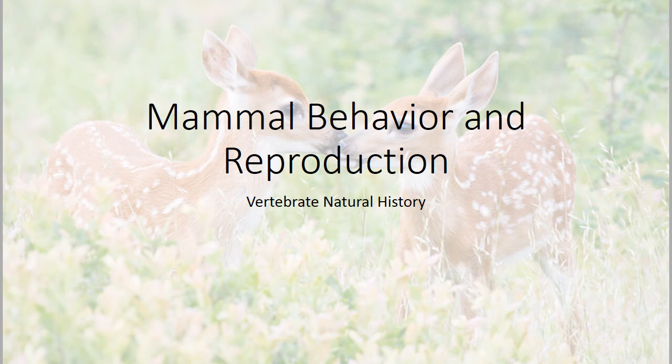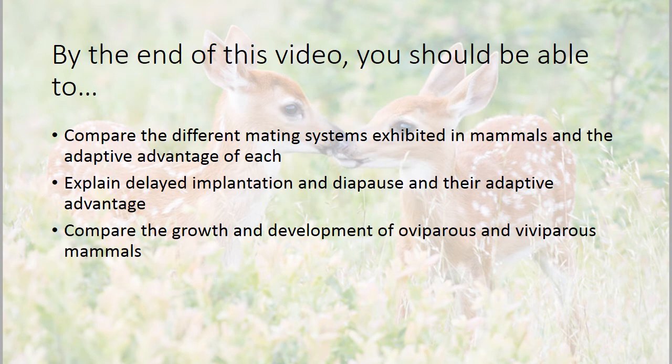Hi guys, this is our mammal behavior and reproduction video. By the end of it, you should be able to compare the different mating systems and explain the adaptive advantage of each, explain delayed implantation and diapause, and compare the growth and development of different mammals.